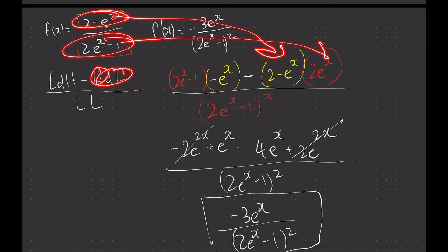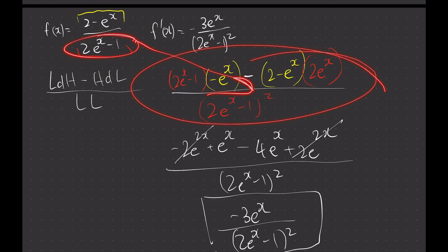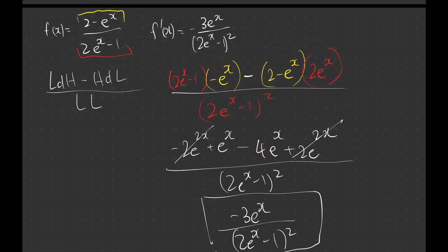Then low squared means you take the low squared. Once you get to there, you expand and distribute. After expanding, you see that the 2x terms cancel, and e to the power of x minus 4e to the power of x becomes negative 3e to the power of x — so you've proven that the derivative equals the given expression.